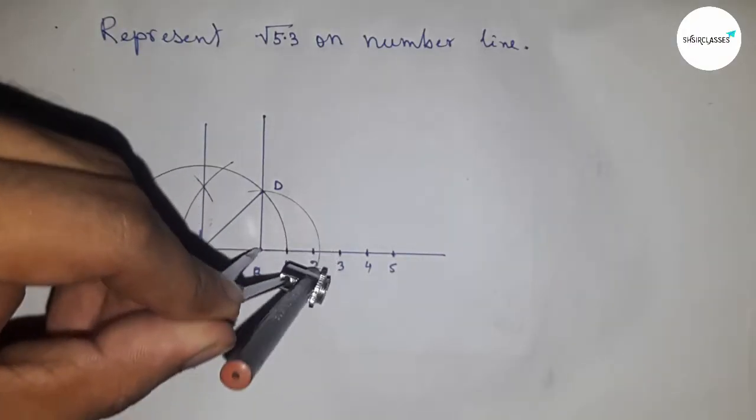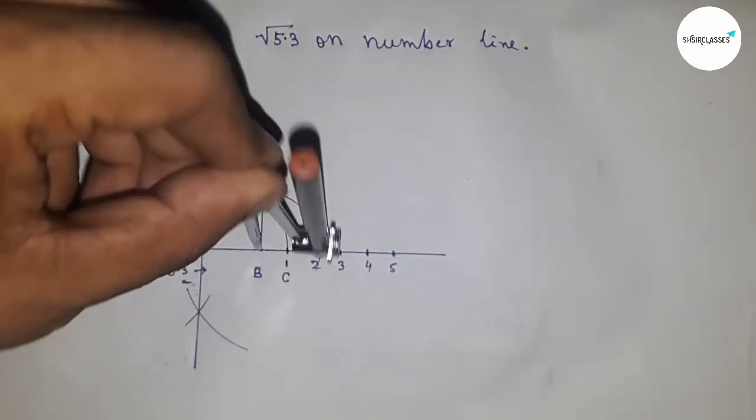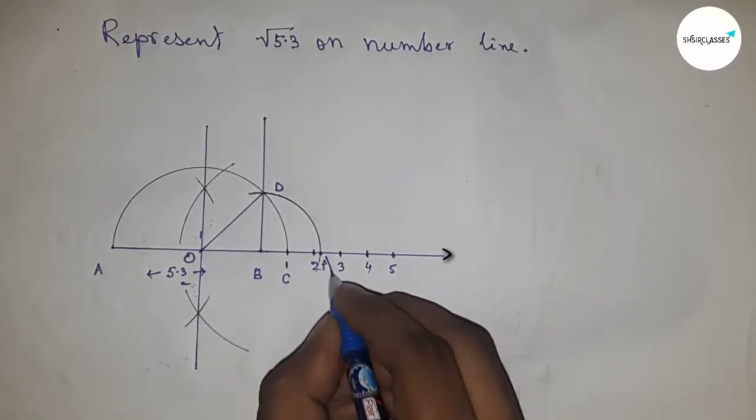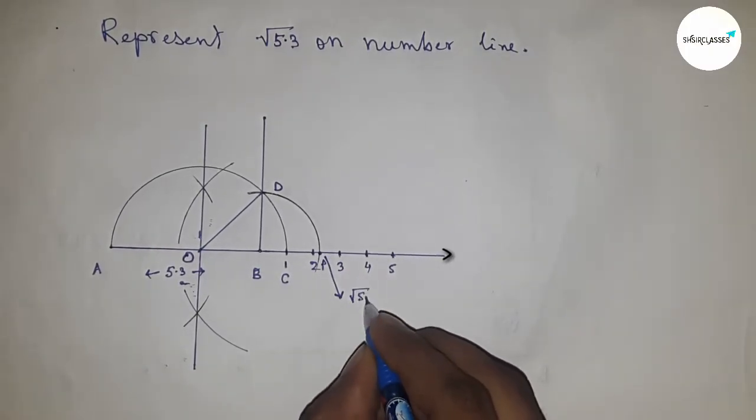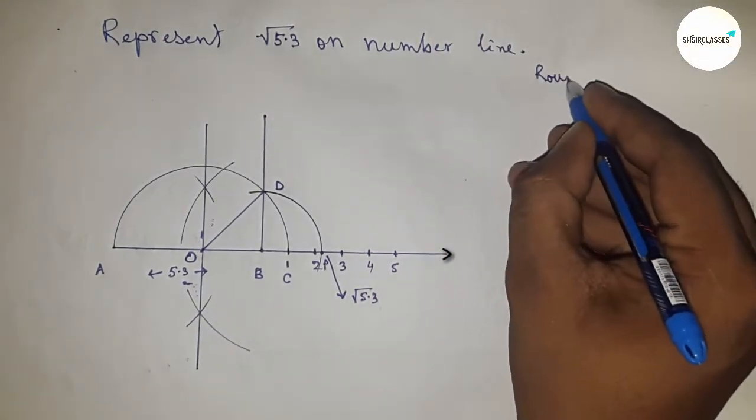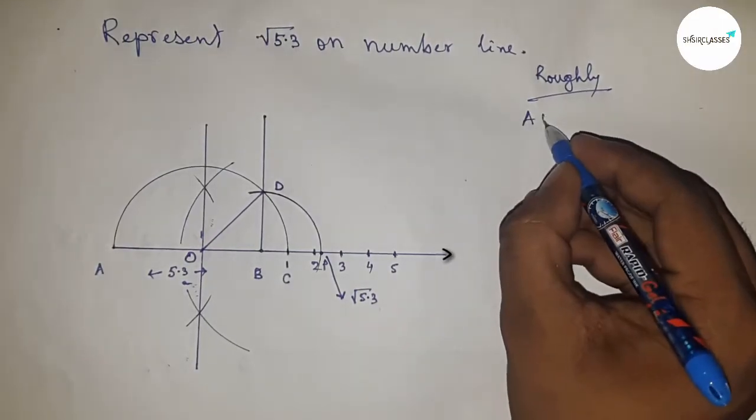Drawing an arc which cuts the number line at a point. So this is P, and this is the representation of root 5.3. Now roughly discussing the calculation.